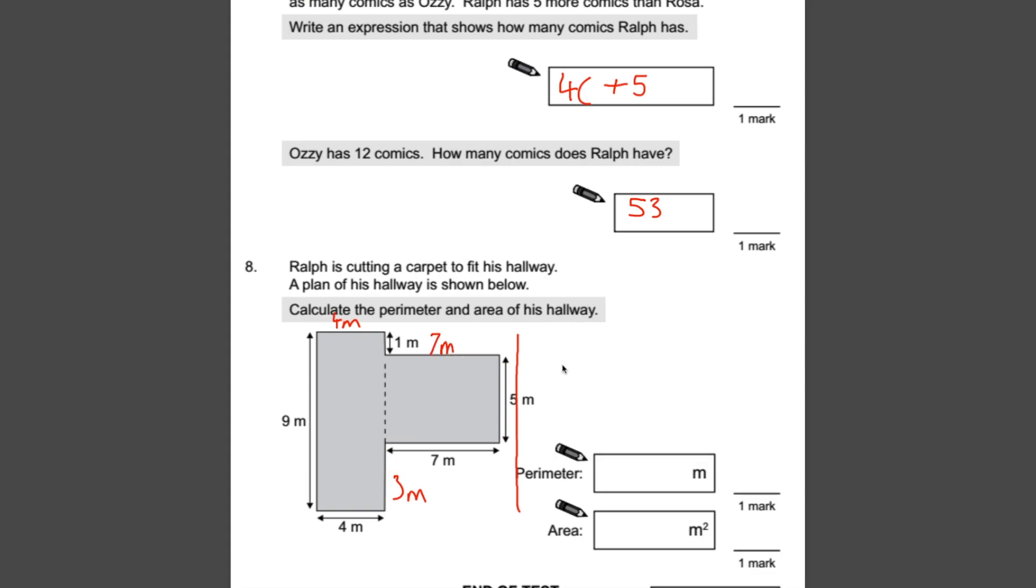All we've got to do now is add up all the sides. So we have nine plus four plus four plus one plus three plus five plus seven plus seven. So that's obviously a long equation. Let's see if we can get rid of a few things. So we have seven add three. Number bonds to ten. That's ten.